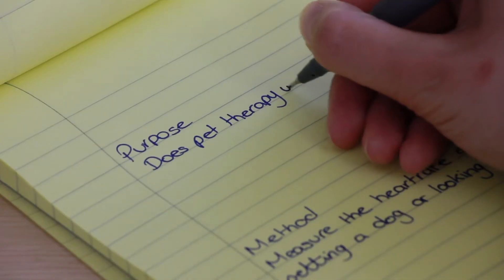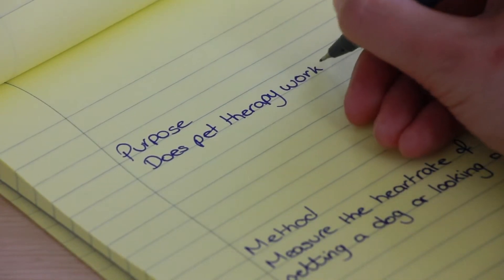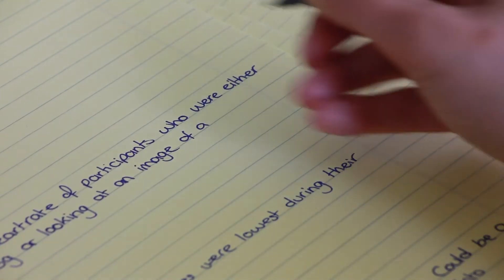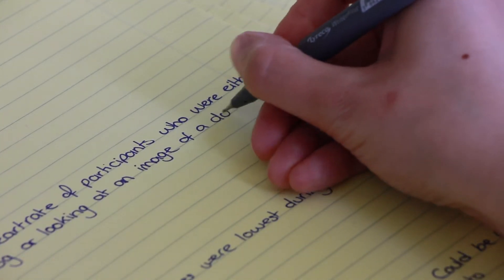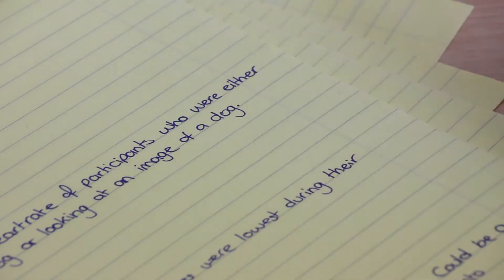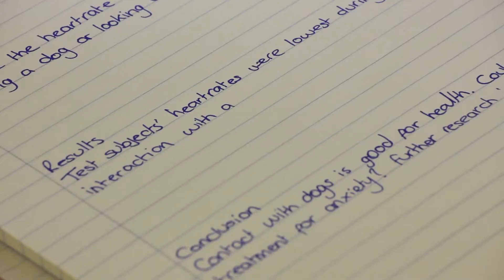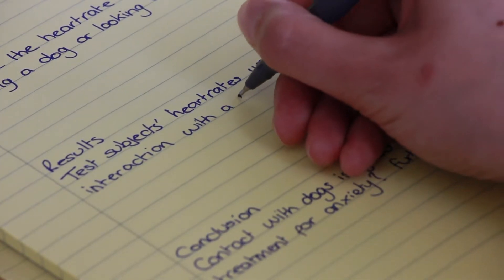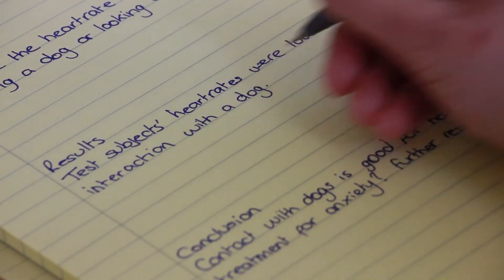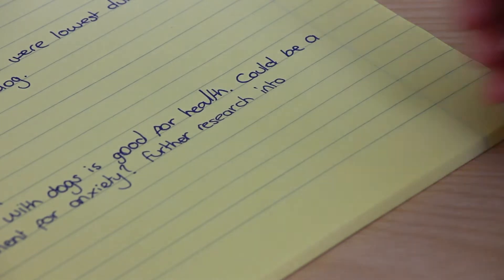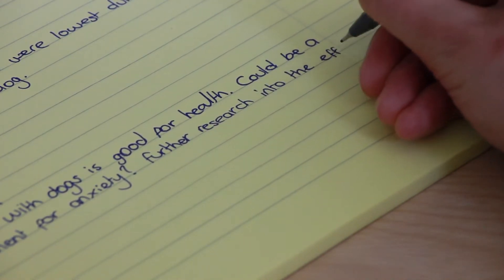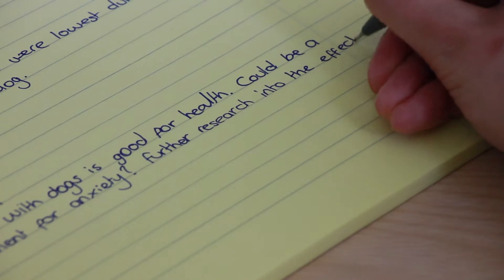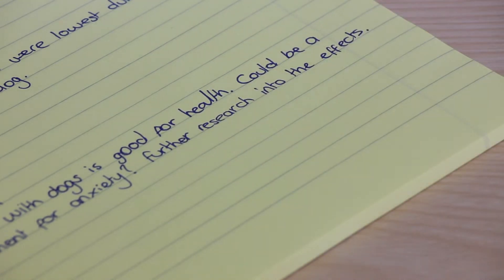The purpose would be: does pet therapy work? The method would be to measure the heart rate of participants who are either petting a dog or looking at a photo of a dog. The results would be that the test subjects' heart rates were lowest during their interaction with a dog, and the conclusion is that contact with dogs is good for health — so it could be a treatment for anxiety, and we need to do further research into the effects.